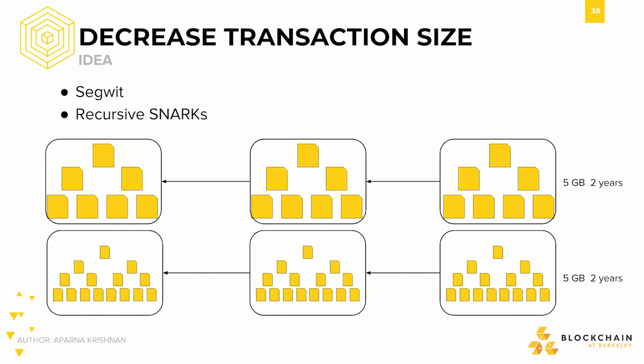Another alternative we mentioned earlier was decreasing the size of transactions themselves. If we decrease the size of transactions and keep the block size constant, we can fit more transactions into the same size blocks. As you can see in the diagram below, both blockchains are 5GB after 2 years, but the one with smaller transaction size has twice the number of transactions. This solution is currently more popular, and we'll cover two main ways to decrease transaction size: SegWit and Recursive SNARKs.